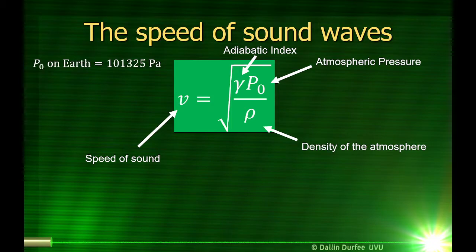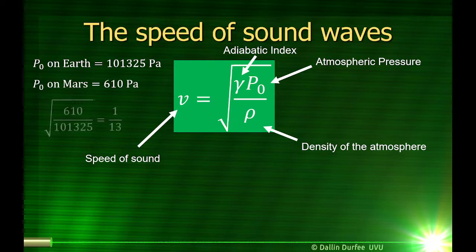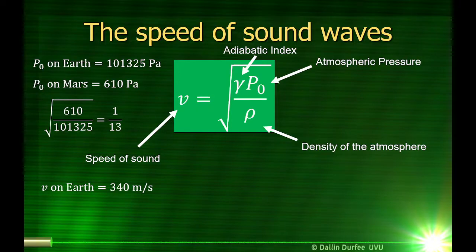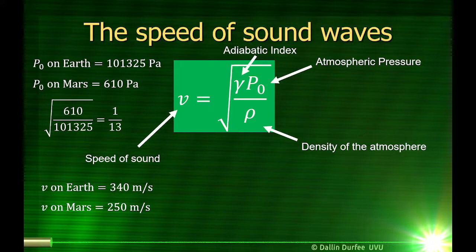Atmospheric pressure on Earth is really quite large compared to atmospheric pressure on Mars — in fact, the square root of the ratio of the two is 1 over 13. So if all that was going on was the pressure changing the speed of sound, you would expect the speed of sound on Mars to be 13 times lower than on Earth. It's not — it's just slightly lower. That's because the bulk modulus scales with the pressure, but so does the density. As you increase the pressure in your bike tire, you're putting more air in there — to double the pressure, you put in twice as much air. So the density also scales with the pressure.